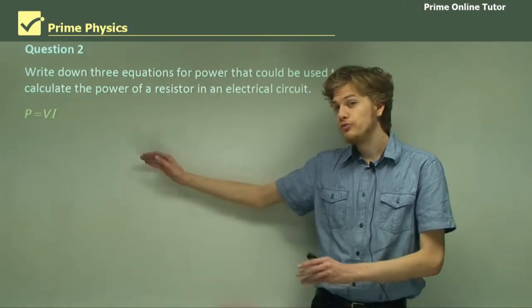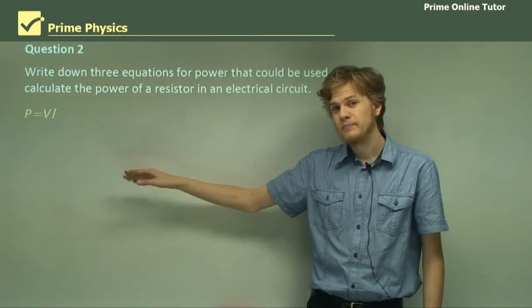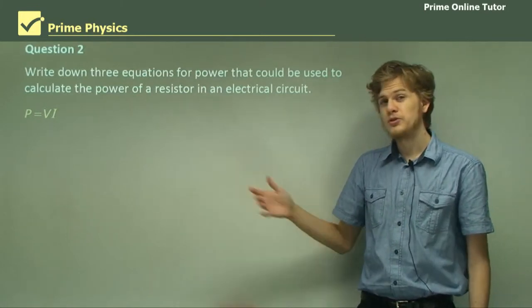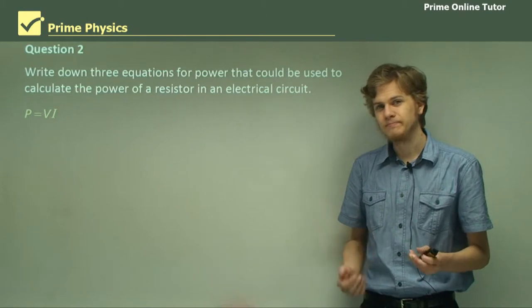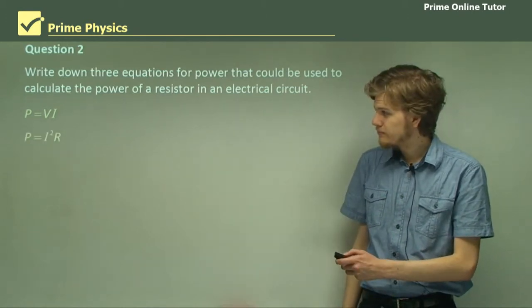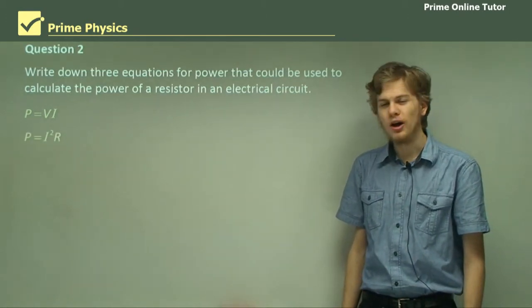So if we know the voltage drop across a resistor measured with a voltmeter and the current through it measured with an ammeter, we can figure out how much heat it's radiating.